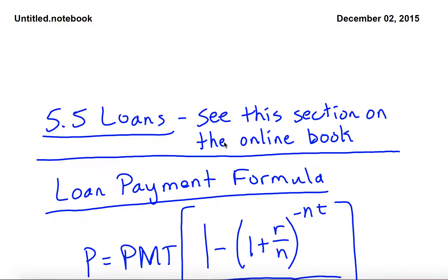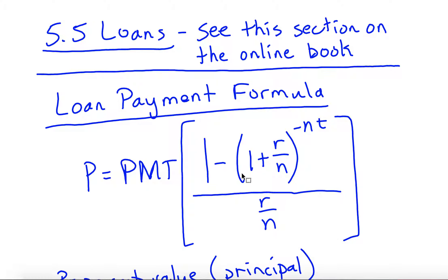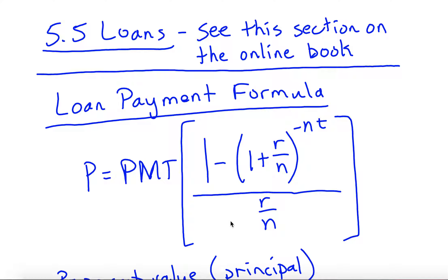Sometimes we need to take out loans to pay for things, especially for big-ticket items. This section talks about how to find out how much you have to pay for a loan, or other information you might want to know. I'm not going to show you where this formula comes from, but it sort of does come from the savings formula. Your future value is zero because the whole idea is that by the end of your period, your loan is paid off.